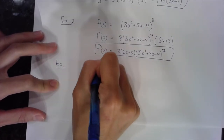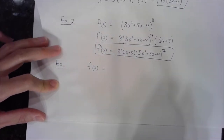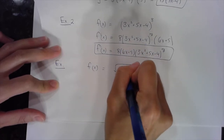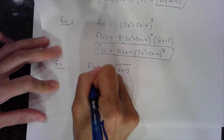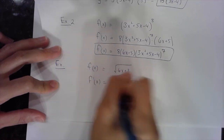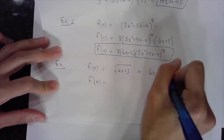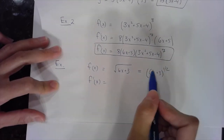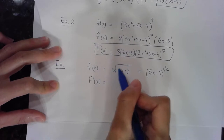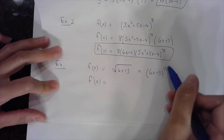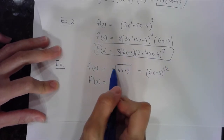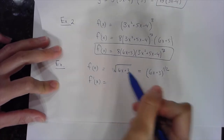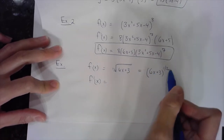Let me do one with a radical sign. Let's do the square root of 6x plus 3, and I want the first derivative. Before I find it, I'm going to rewrite this as (6x plus 3) to the one-half. Remember that a radical sign can be represented as an exponent — the index of the radical is the denominator of the exponent. So the square root of this is the same as the base to the one-half.